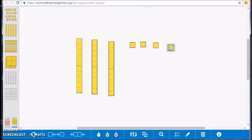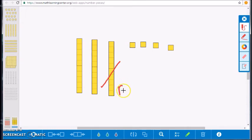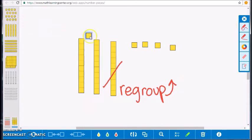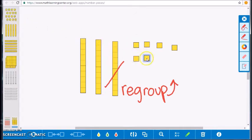Megan gave Sabrina 19 of her stickers so we need to take away 19 of the blocks we have. We have four ones and need five more, so we have to regroup by breaking the base ten block apart into ten ones to allow us to take the 19 stickers away that Megan gave to Sabrina.